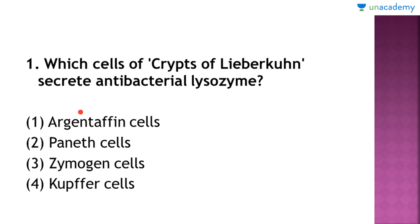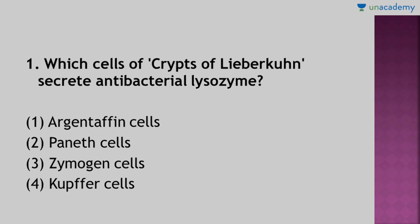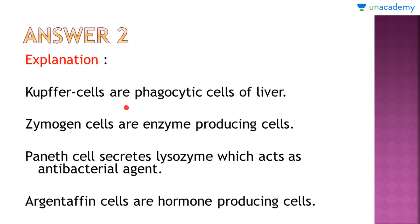Friends, the Argentaffin cells are in the stomach. The Paneth cells are also in the stomach. The zymogen cells are also in the stomach. But the Kupffer cells are in the liver, so option four is ruled out. The correct answer is option two — the Paneth cells. Kupffer cells are the phagocytic cells of the liver, zymogen cells are enzyme-producing cells, Paneth cells secrete lysozyme which acts as an antibacterial agent, and Argentaffin cells are hormone-producing cells.